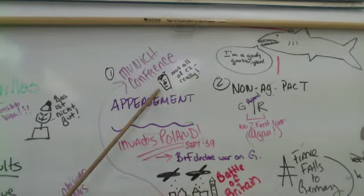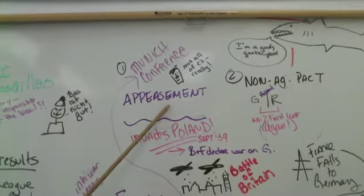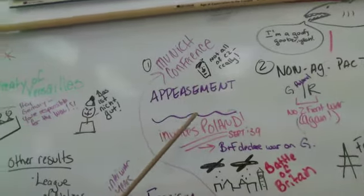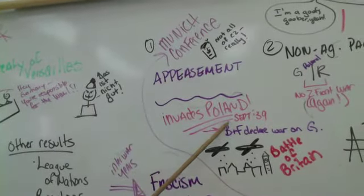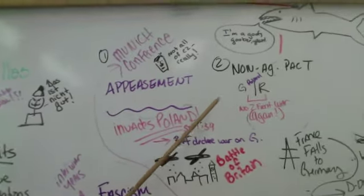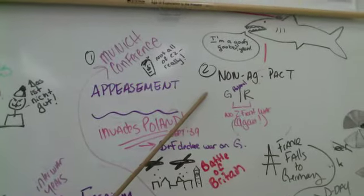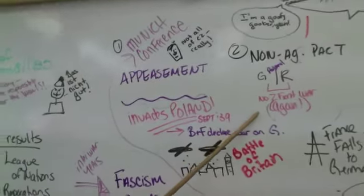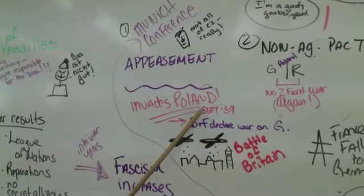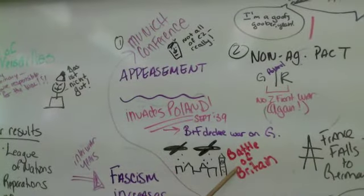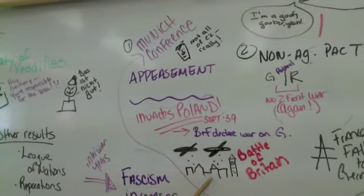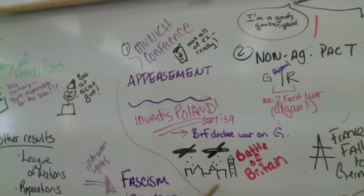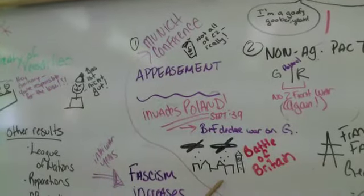Hitler had the Munich conference, where he claimed he didn't really want all of Czechoslovakia — just some German-speaking areas. People like Chamberlain of the UK agreed because they didn't want another war. That was called appeasement. Hitler also signed a non-aggression pact with the Soviets, wanting to avoid a two-front war like in World War I. But in September of 1939, Hitler invaded Poland, and Britain and France declared war on Germany — they were not going to appease him anymore.